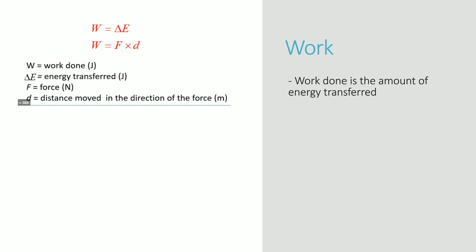Work done is simply the amount of energy transferred to an object. How you calculate it is relatively easy: force times the distance the object is moved in any particular direction. So if you have a box with a force of 10 newtons going to the right and it moves 0.5 meters, the work done is 10 times 0.5, which is 5 joules. Work is the same as energy transferred, or change in energy.